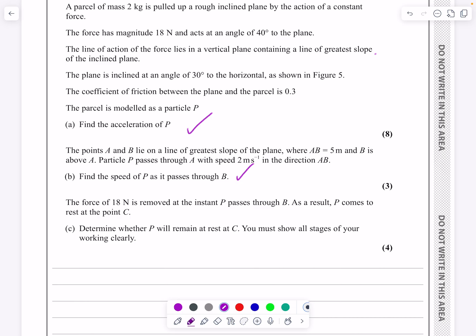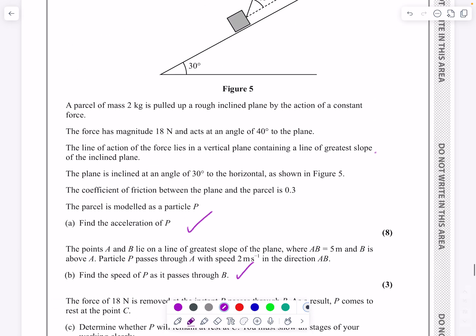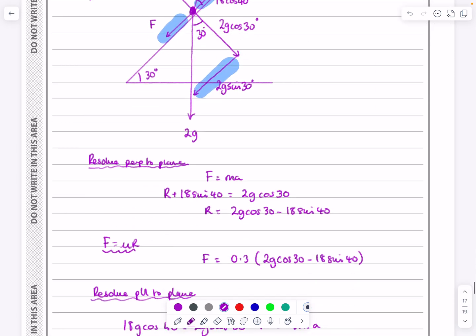What they then say is the force of 18 newtons is now removed. When it gets to B, when it gets to that point, the force is taken away. As a result, P comes to rest at point C. Determine whether P will remain at rest and you must show all your stages of the calculation as you're going through and doing this. So this is quite a complicated little idea. Let's just talk about it first and then we'll actually go ahead and do it.